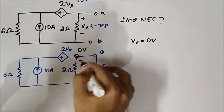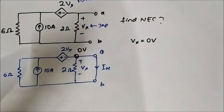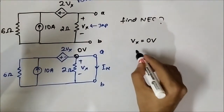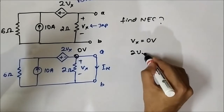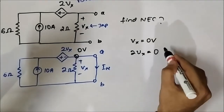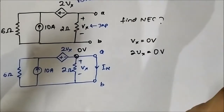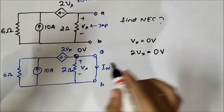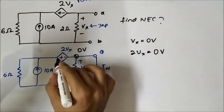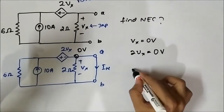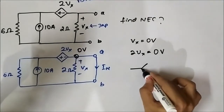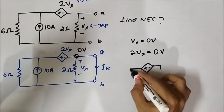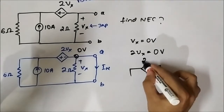The same 0V will appear across this. Now, as Vx is equal to 0V, 2Vx is also equal to 0V, which means this dependent voltage source will also get short circuited. Thus, the 2Vx dependent voltage source will get short circuited.